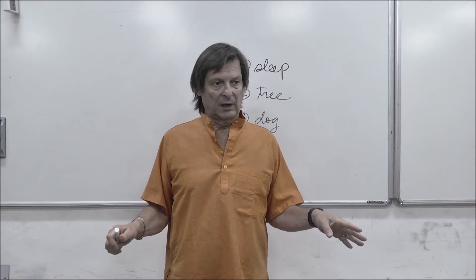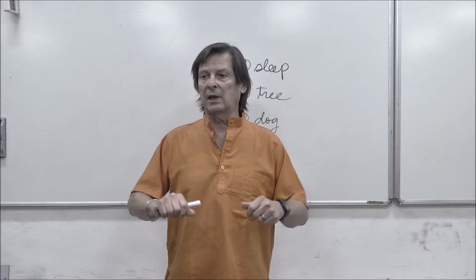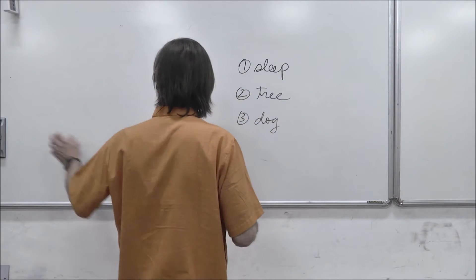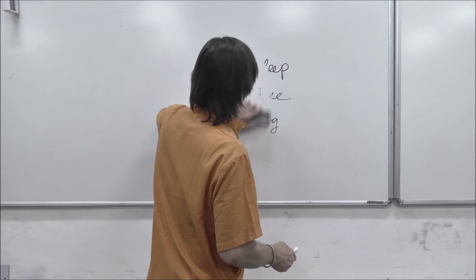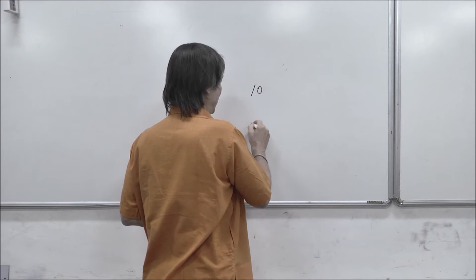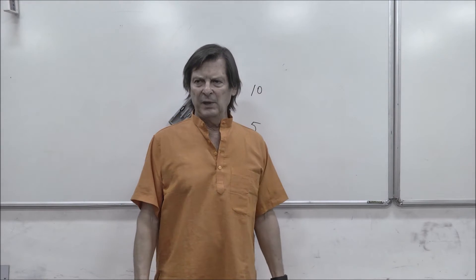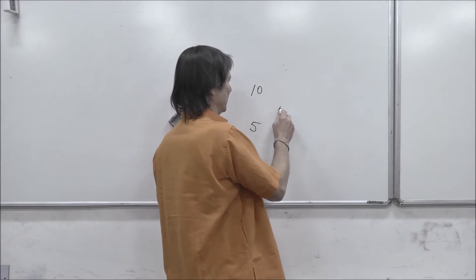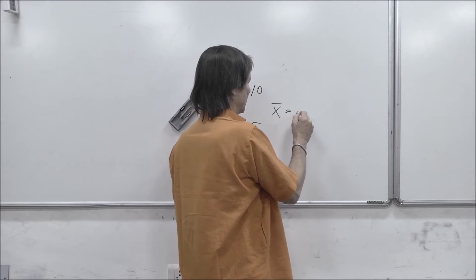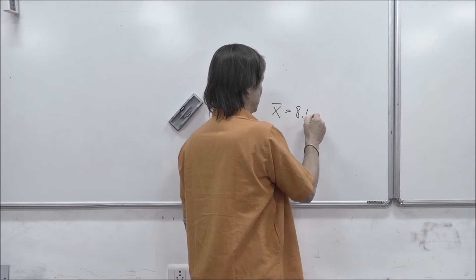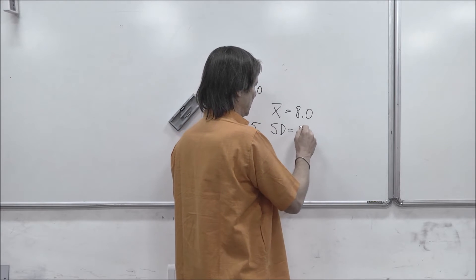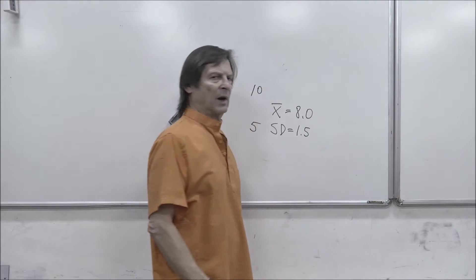After we wrote them down, the professor said, hey, let's see how many you got right. I realized some people got all ten right and some people only got five right. We did a mean for the class and realized that the mean, which we represent as x-bar, was 8.0 right.